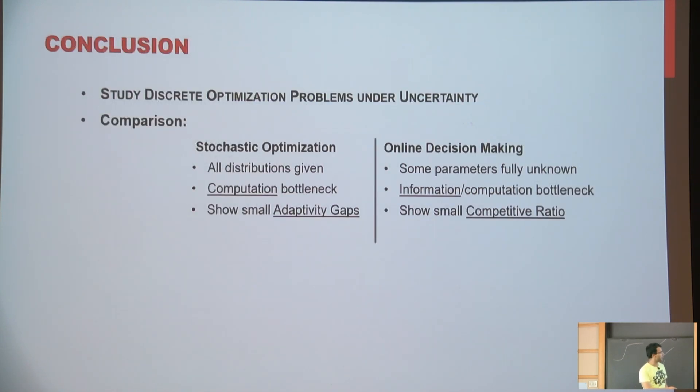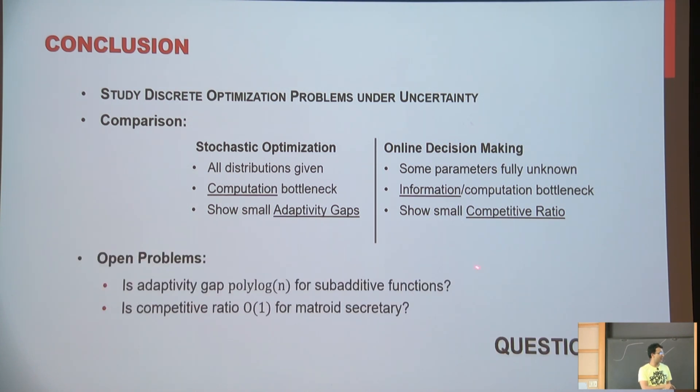So just to wrap up, we talked about the stochastic and online decision making. So again, I'm saying these are very large areas. I'm just talking about one aspect, one idea here. Adaptivity gaps, competitive ratio, computation versus information and computation. Some open questions on sub-additive functions and matroid secretary. Thank you.